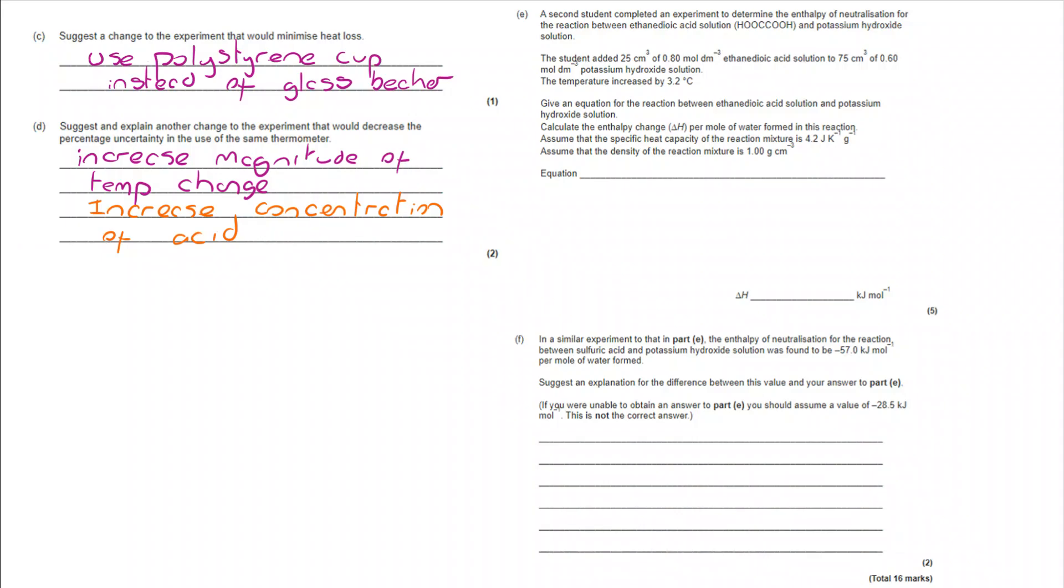Moving on to part E, we've got an equation to begin. We are told the formula of ethane diolic acid. We know that potassium hydroxide is KOH. We also know we're going to make a salt. So the salt is going to be a potassium salt with an ethane diolate ion. So we're going to end up with K's on the end instead of H's. We know we're going to need two of them, which helps with balancing. And we can therefore see we're going to make two water.